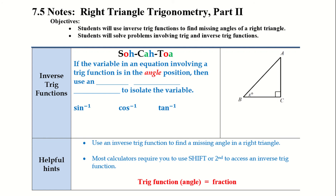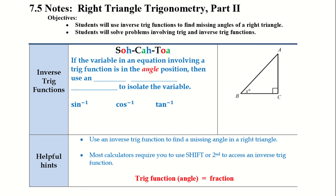Hello! We are going to be doing the 7.5 notes today, so more of our right triangle trigonometry. This is part 2, and our objectives are: you'll be able to use inverse trig functions to find missing angles of a right triangle, and we'll solve problems involving trig and inverse trig functions.